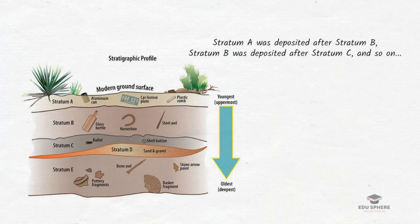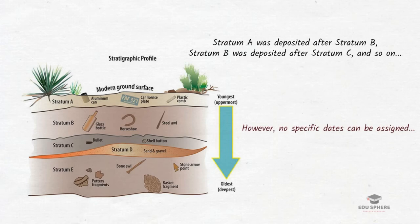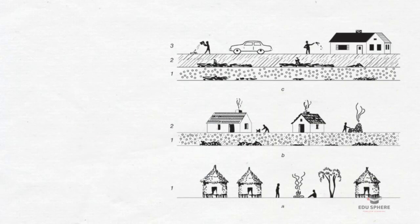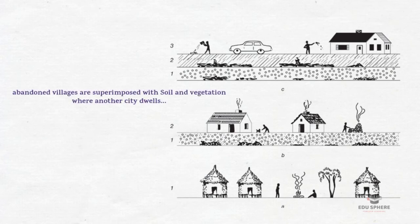As you can see in this figure, applying the principle of superimposition, we know that stratum A was deposited after stratum B, stratum B was deposited after stratum C, and so on. Without additional information, however, we cannot assign specific dates or date ranges to the different episodes of deposition. The second picture also represents how abandoned prehistoric villages are superimposed with soil and vegetation where another city dwells. Therefore, whenever a stratigraphic sequence is observed during the excavation of a site, relative ages of the cultural levels can be worked out. The stratigraphic associations of artifact types within and between archaeological sites are regarded as one of the very important methods of relative dating.